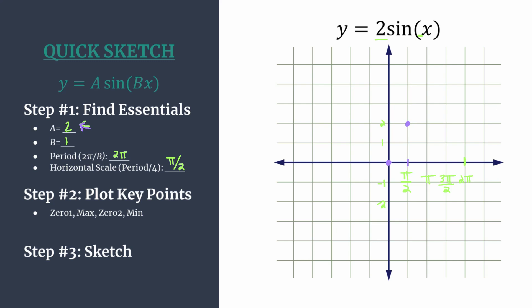Back to our pattern, we see our next tick mark here at pi will be a zero. Then our minimum will happen at our third tick mark moving right. So that's at three pi over two.